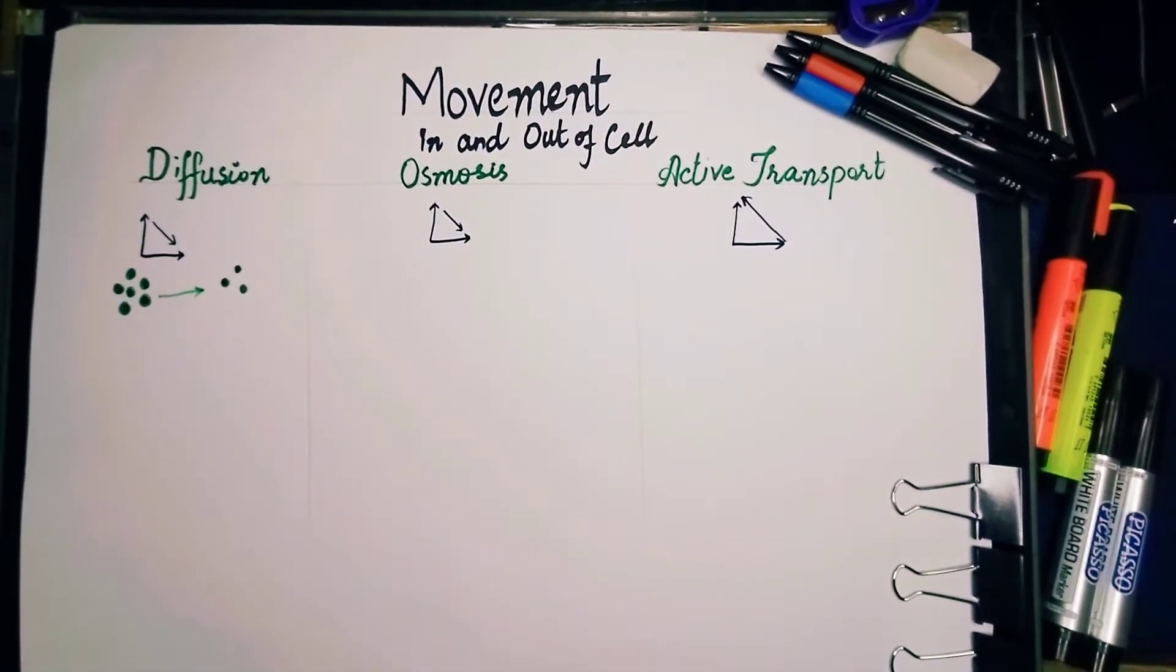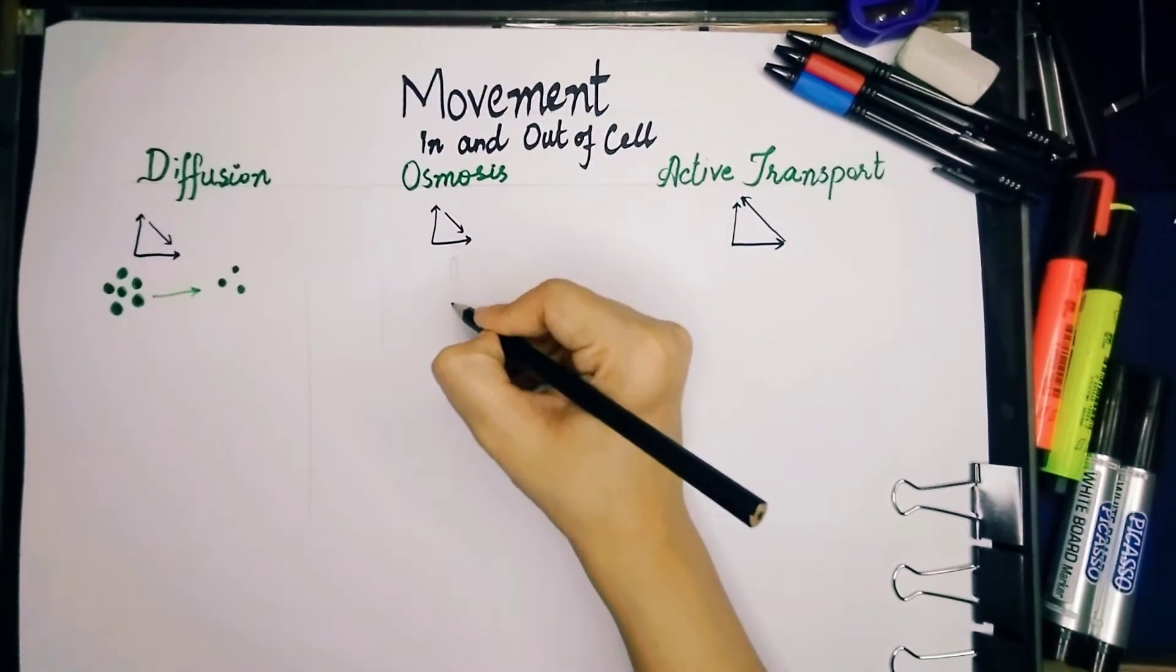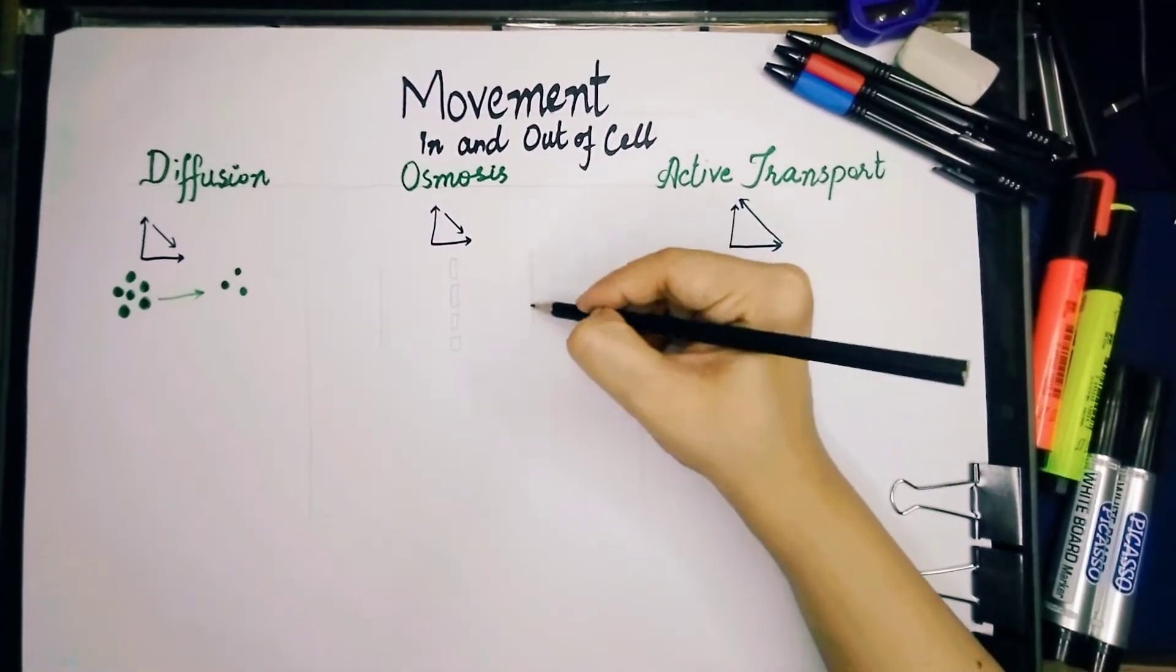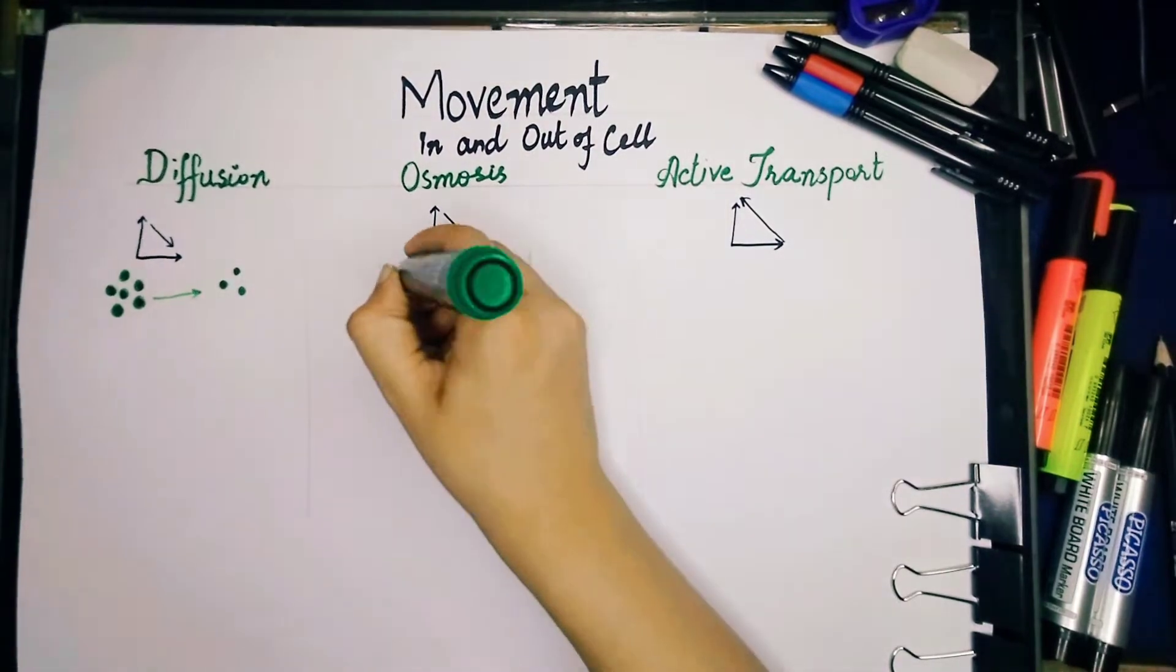Let me explain this with the help of an example. For example, you can see in the diffusion, the molecules are moving from a highly concentrated area to a lower concentrated area where there are less number of molecules.